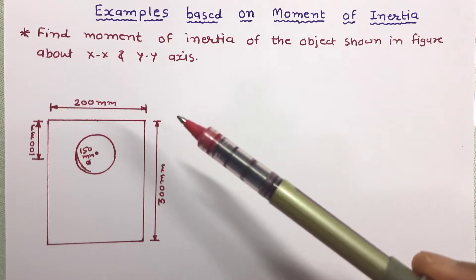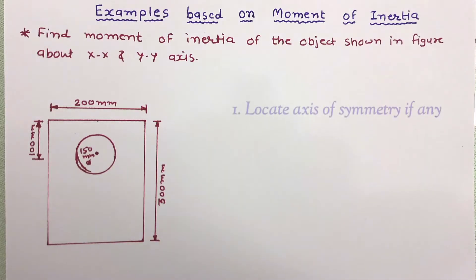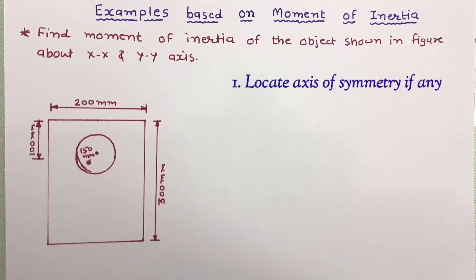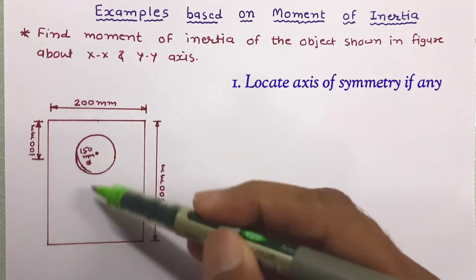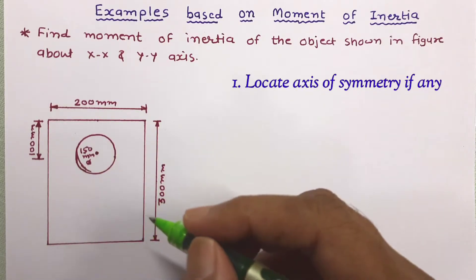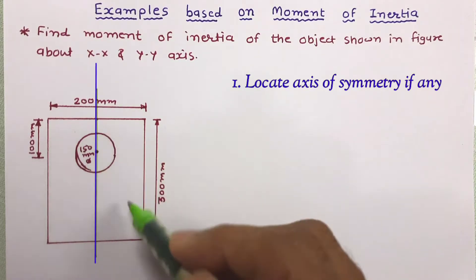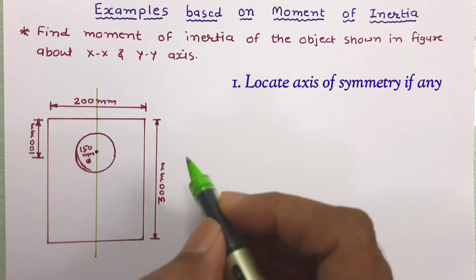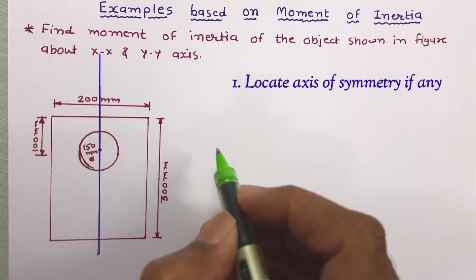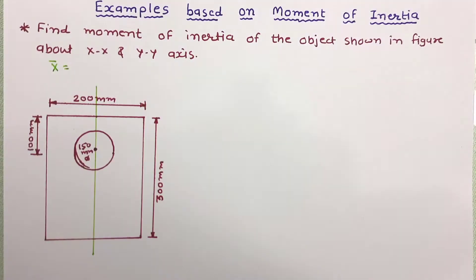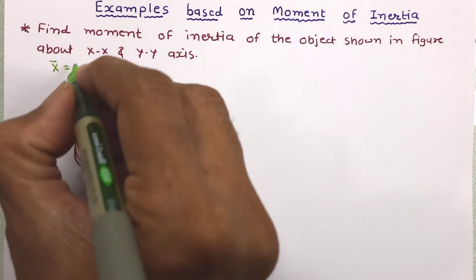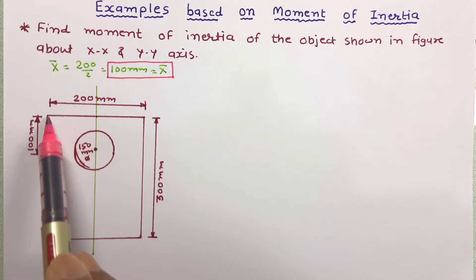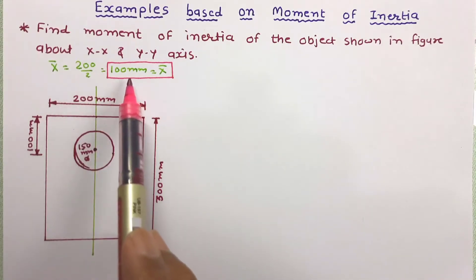First of all we have to work out the centroid of this figure. The very first step is to determine the axis of symmetry. The figure is symmetrical about the yy axis, so x-bar can be directly obtained. x-bar is the maximum dimension of the figure in the x direction divided by 2. The dimension in the x direction is 200, so x-bar is 100 mm.